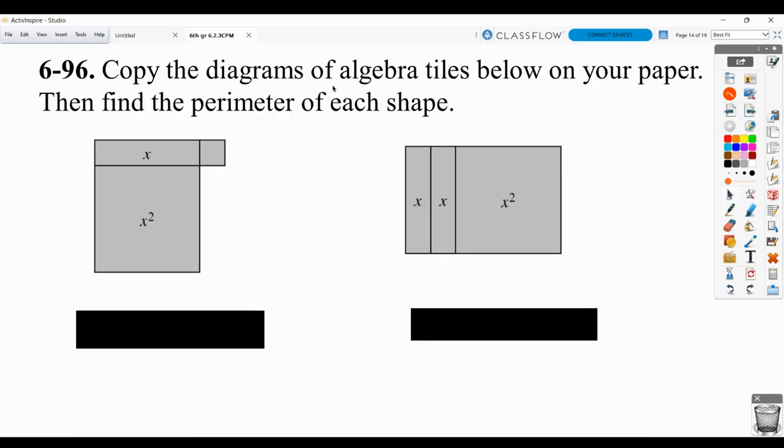The first thing they want you to do is copy the diagrams of these tiles and then find the perimeter of each shape. You can make this copy on graph paper, you could do it with your e-tool and then insert a screenshot of it, or you could put it in your notebook.